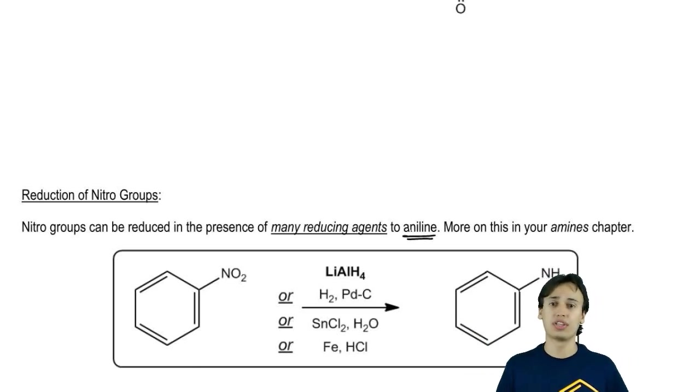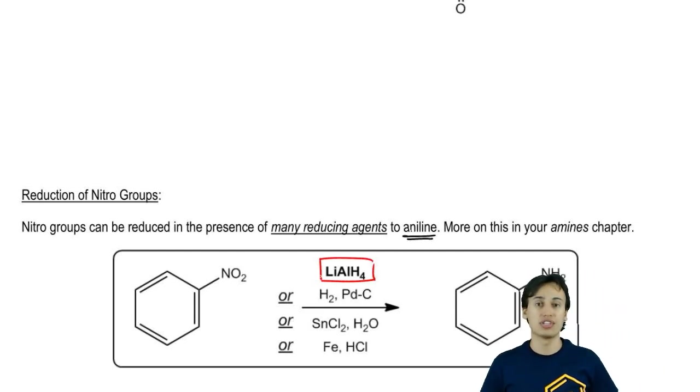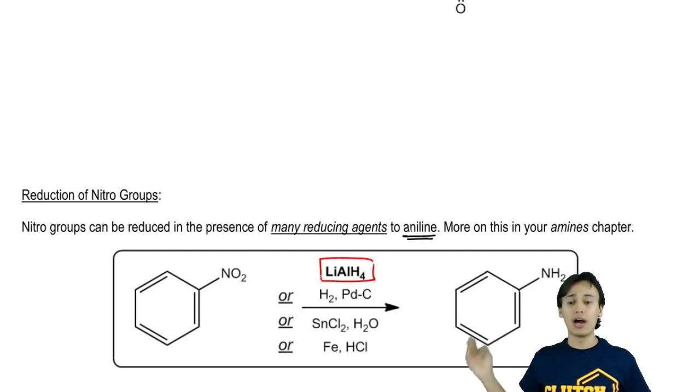The one we always want to start with and probably want to be our default whenever we think reduction is lithium aluminum hydride. That's because this is the most common reducing agent in all of organic chemistry and it's also one of the strongest. Lithium aluminum hydride will absolutely turn a nitro group into aniline.